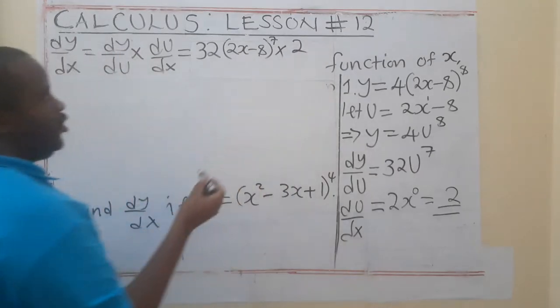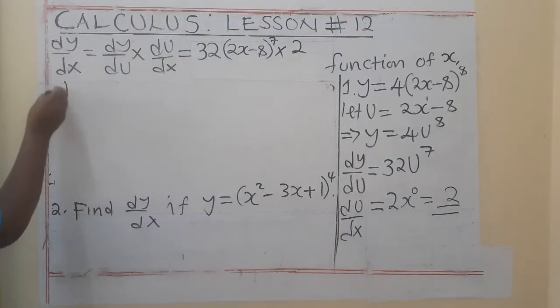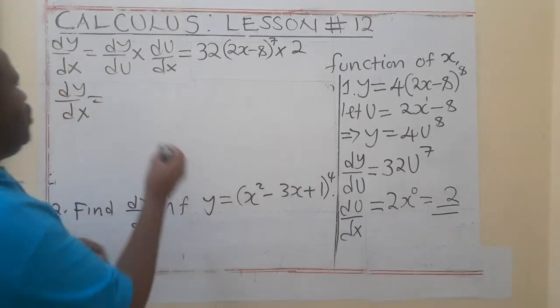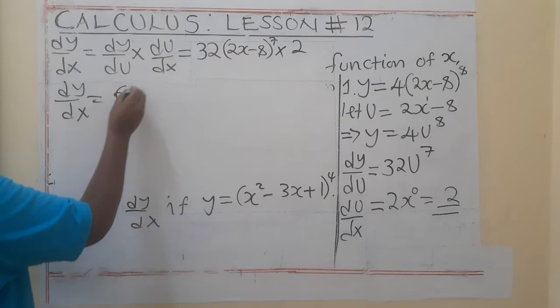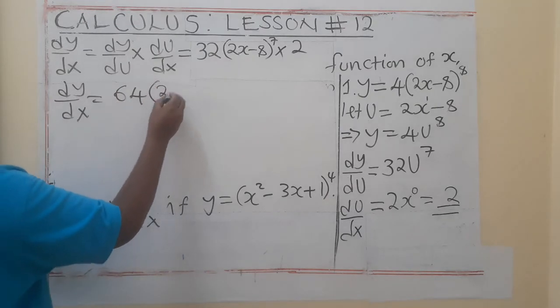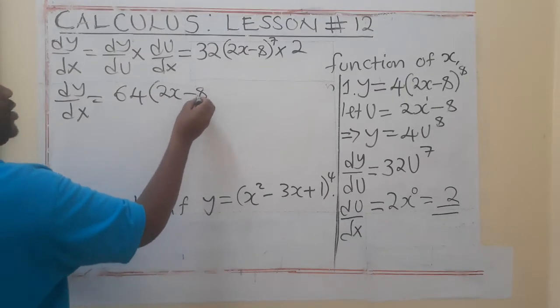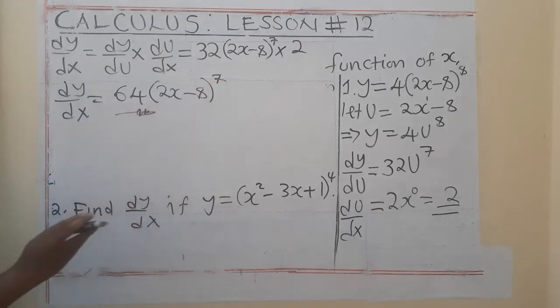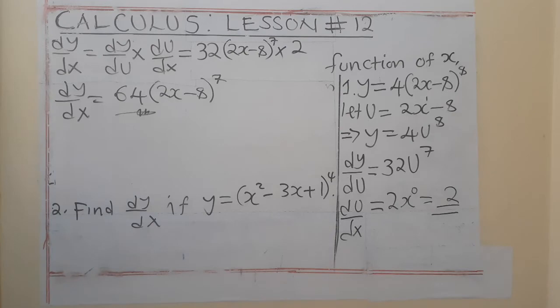So, I will say by 2 here. So, dy/dx is equal to, here you are going to try. So, the 2 by 2, you have got 64. So, I've got 64 open the bracket 2x minus 8 to the power 7. This one is the gradient function of that.